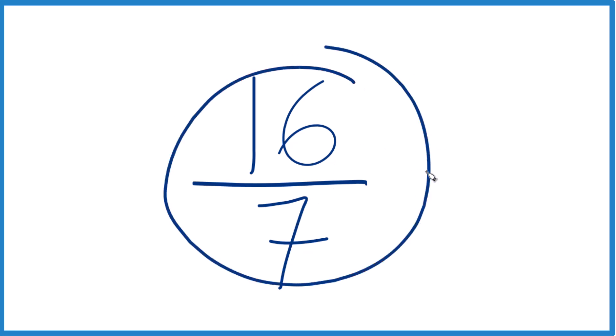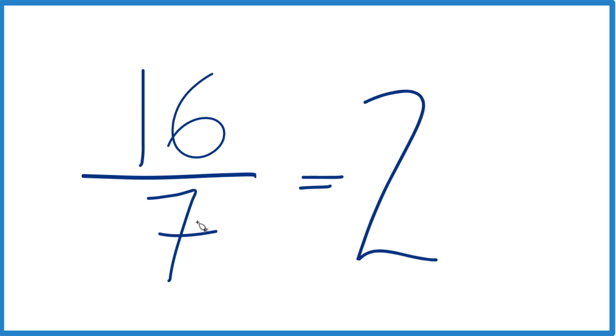But we can write it as a mixed number. So let's see. 7 goes into 16, 2 times 7, that'd be 14 with 2 left over. We just keep the 7, bring it across.